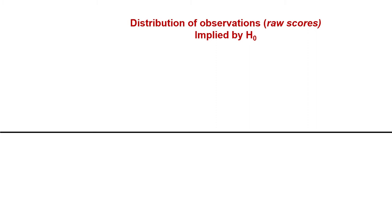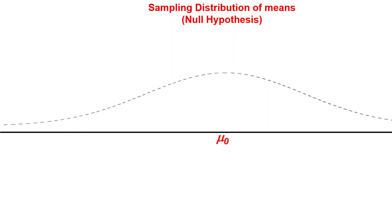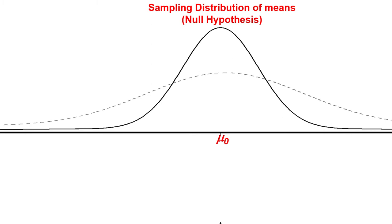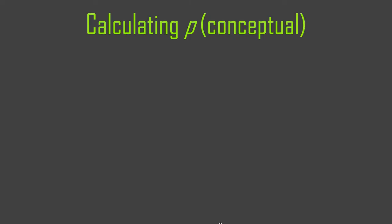More detail about the distributions implied by the null hypothesis — actually two distributions. There's a distribution of raw scores and then a distribution of means. The null hypothesis implies a certain distribution of values. I use a dashed line to represent the raw score distribution. The null hypothesis implies some raw score distribution and a mean of that raw score distribution. If you imagine taking an infinite number of samples and plotting their means, that would be the sampling distribution of the mean — the null hypothesis model.